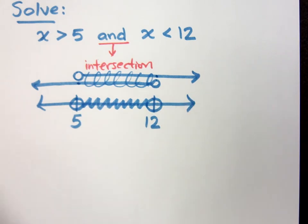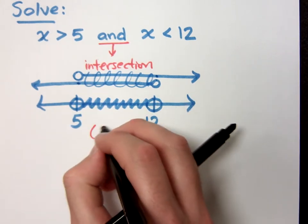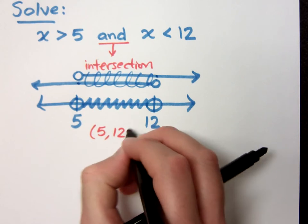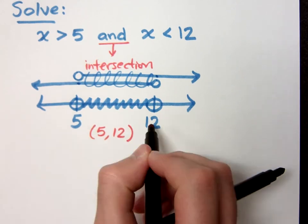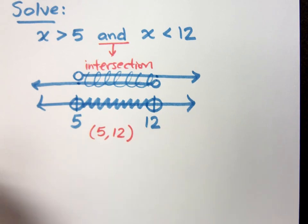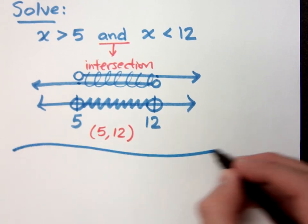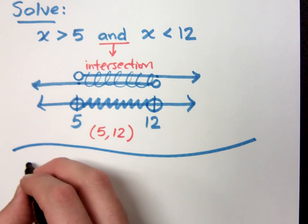So, we take this guy and go into interval notation. We would simply write from 5 to 12, parentheses on both ends, because we're not including the 5 or the 12. Well, let's try this guy.